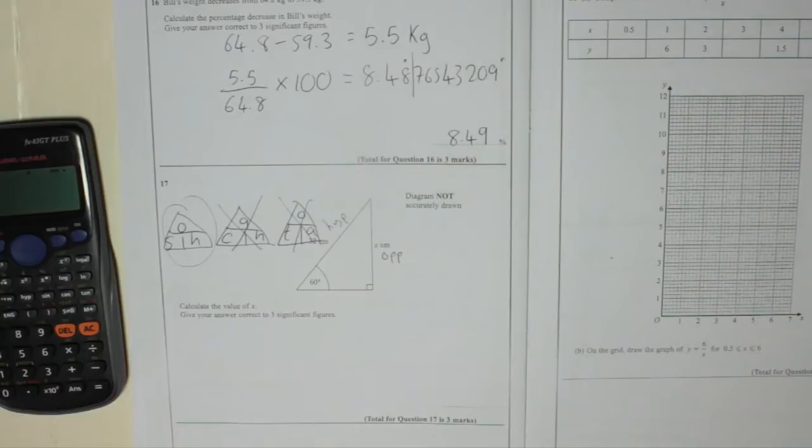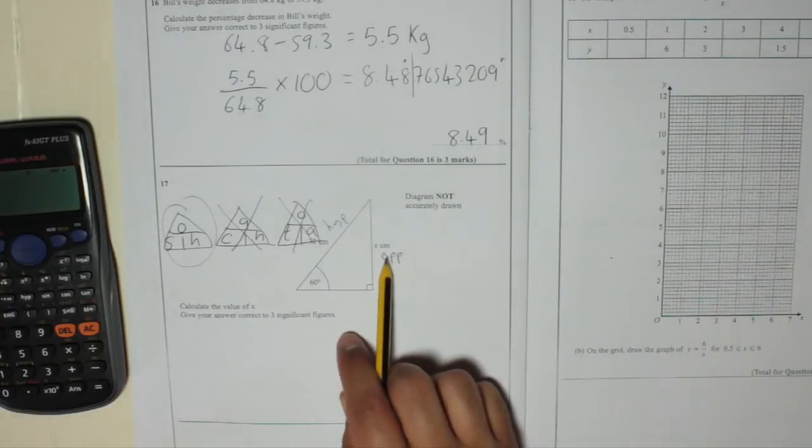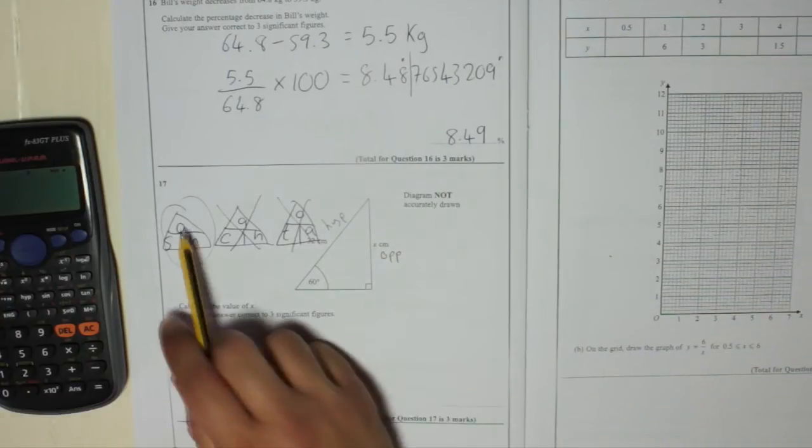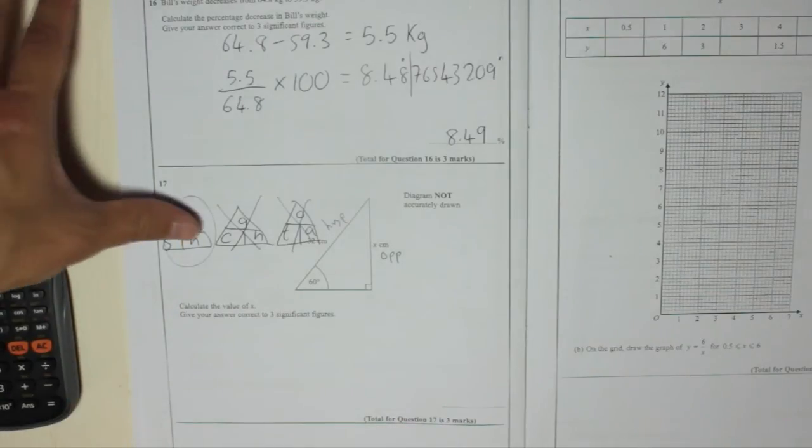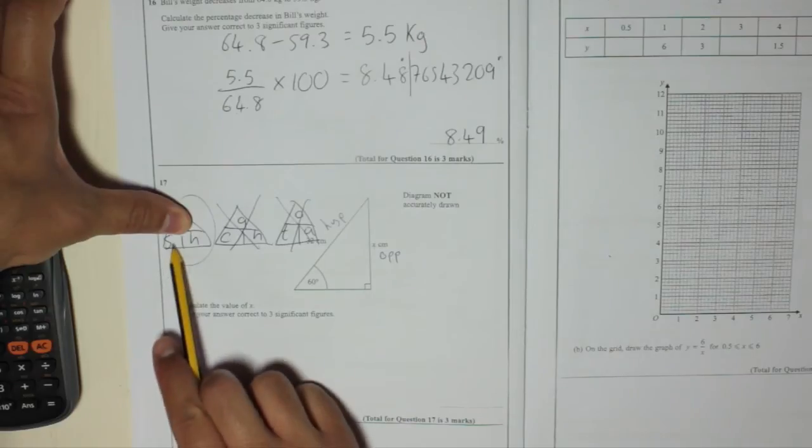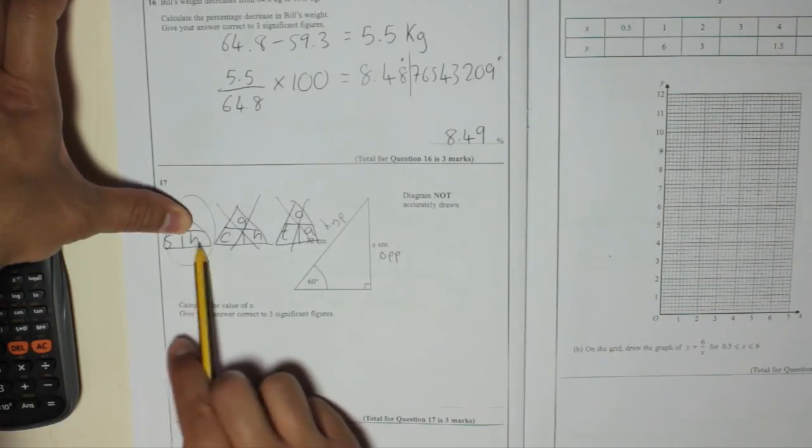So we don't want that, we don't want that. We want to find the opposite, which is X. So O at the top. Now remember, to use the formula triangle, cover up the one that you actually want to find and see what you do with the others to find it. Because they're next to each other, it means you are multiplying them together.